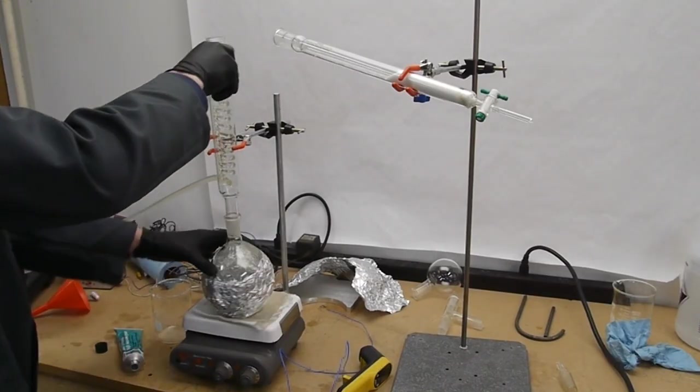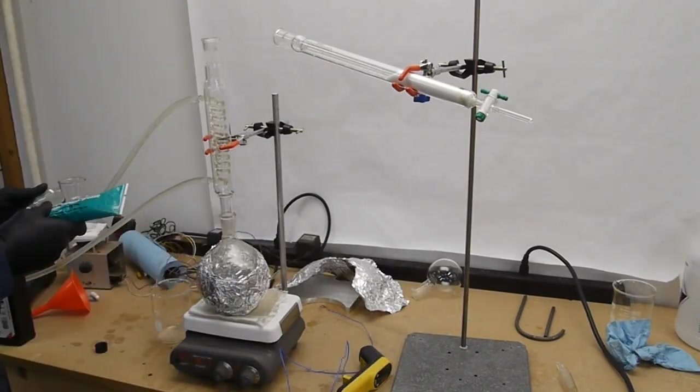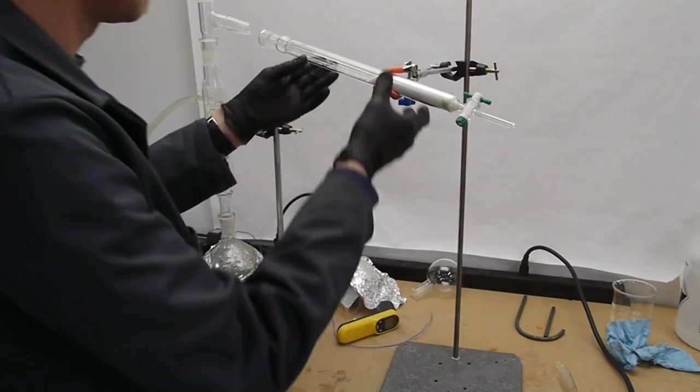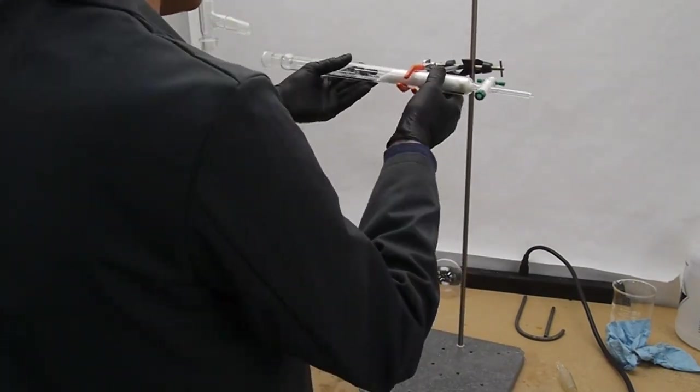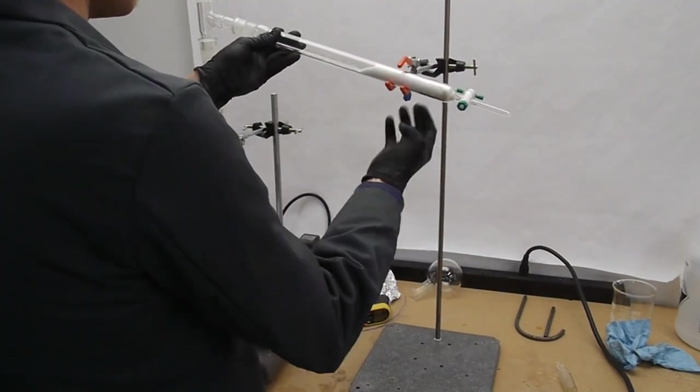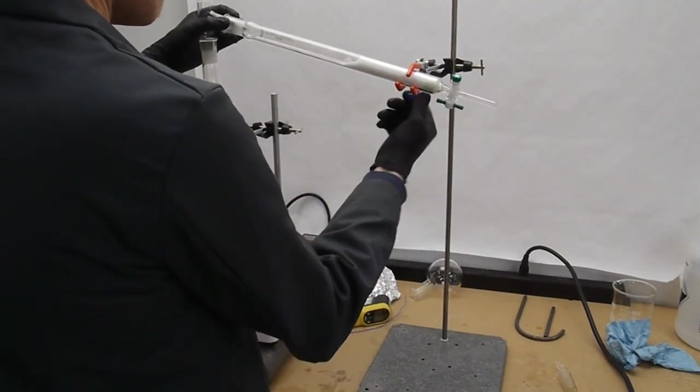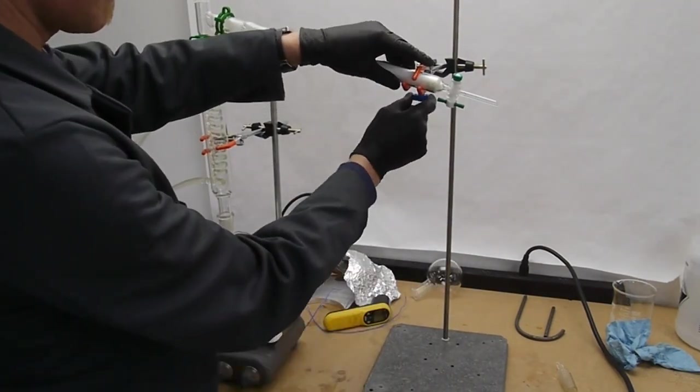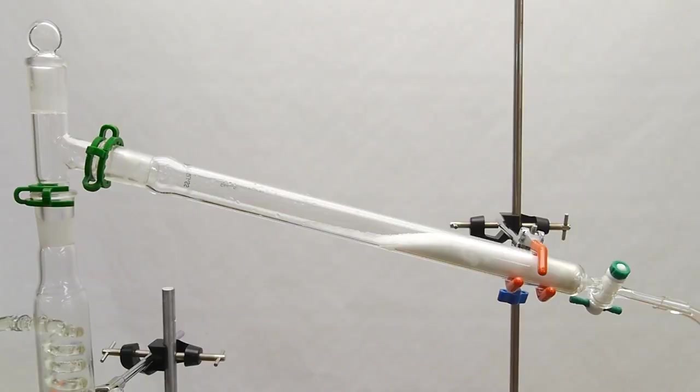I used silicone grease on all the ground glass seals to make sure that everything was gas tight. So at this point in the system we have fairly dry ammonia gas, but there's still a fair bit of water vapor mixed in, and we'd like to remove that so that when we compress or chill our ammonia gas into a liquid we don't have lots of water contamination.